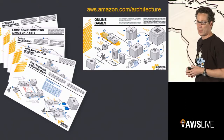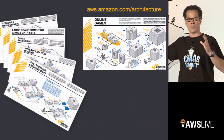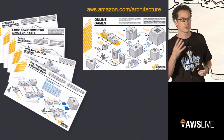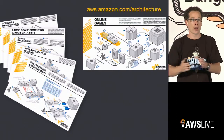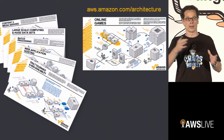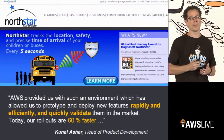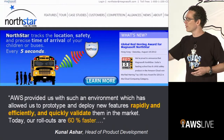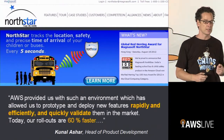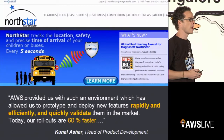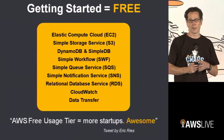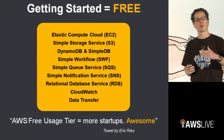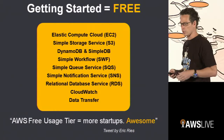The reference architecture you see here is a full, somewhat complex architecture at scale. Our solution architects and account managers in India are trained to help you think through where you want to get to at scale, but also how to start small and build as you grow. One Indian company that has really benefited is Nordstar, which does location and safety tracking for kids on buses — they indicated that AWS allowed them to get to market 60% faster. And getting started is free — there's a free tier where you can sandbox and try things out.